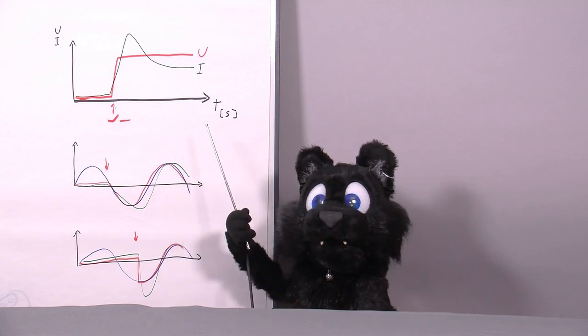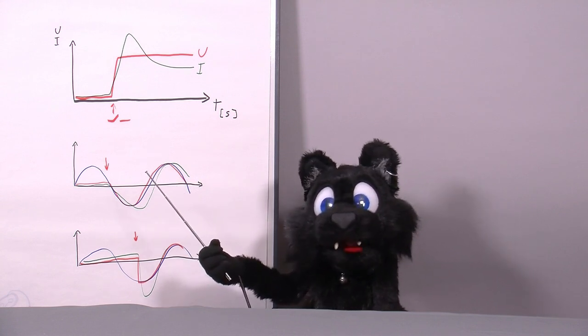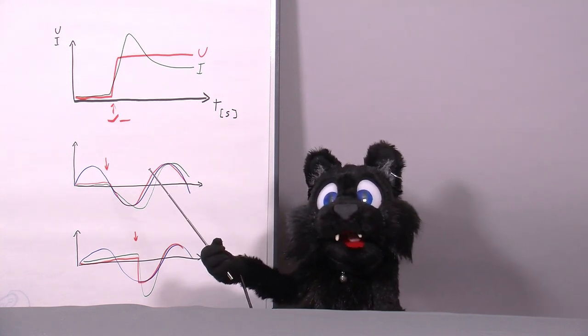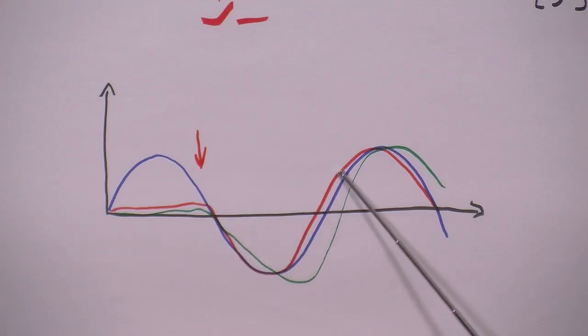Since normal household current is AC, the inrush current also depends on just about where in the sine wave the bulb is initially connected. If you happen to flip the switch when the voltage is close to zero, the bulb is turned on soft.